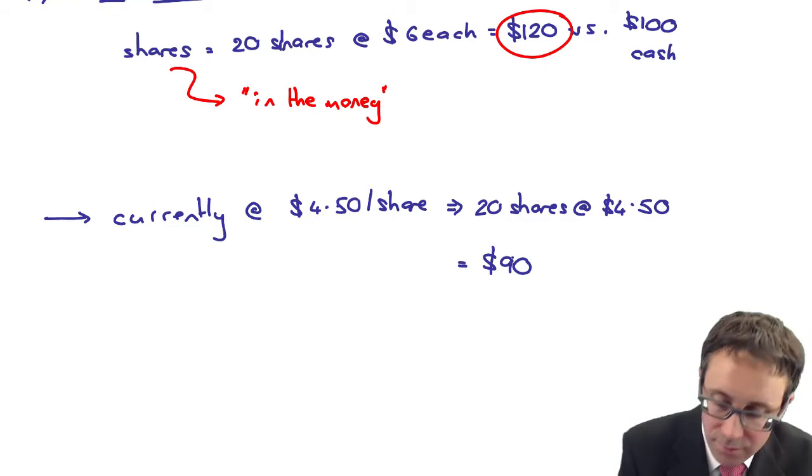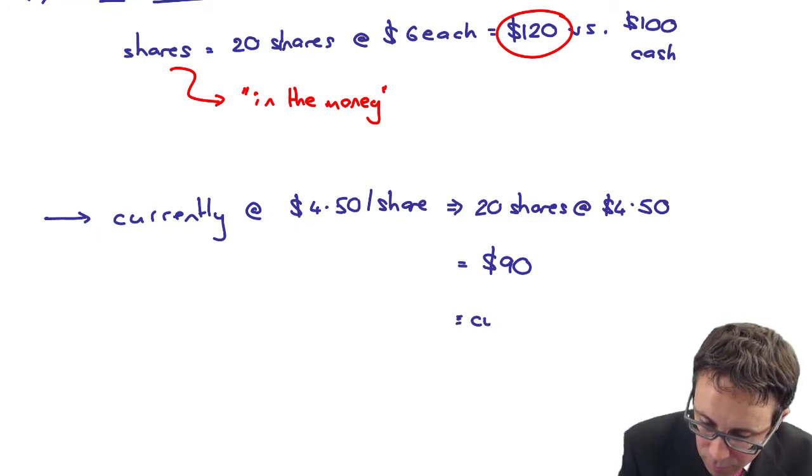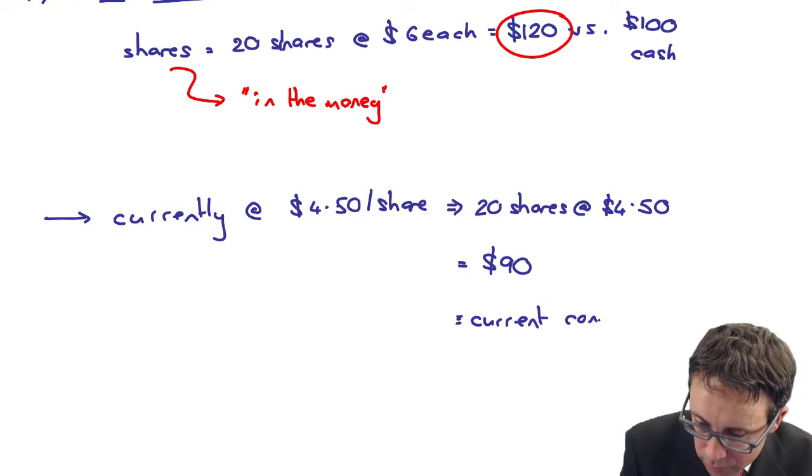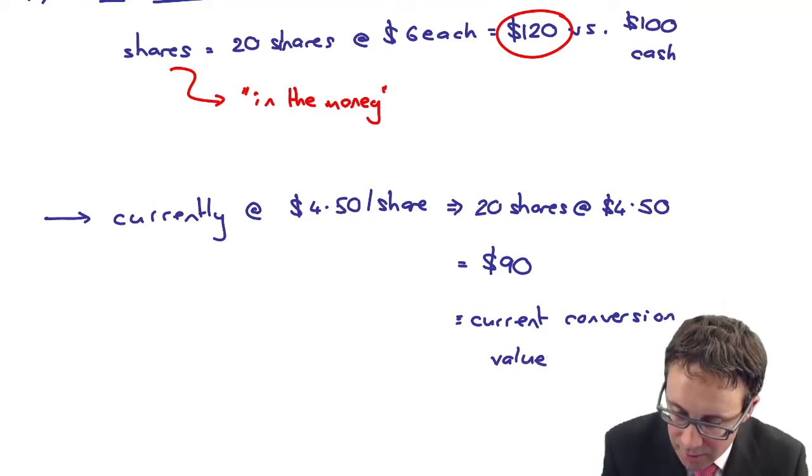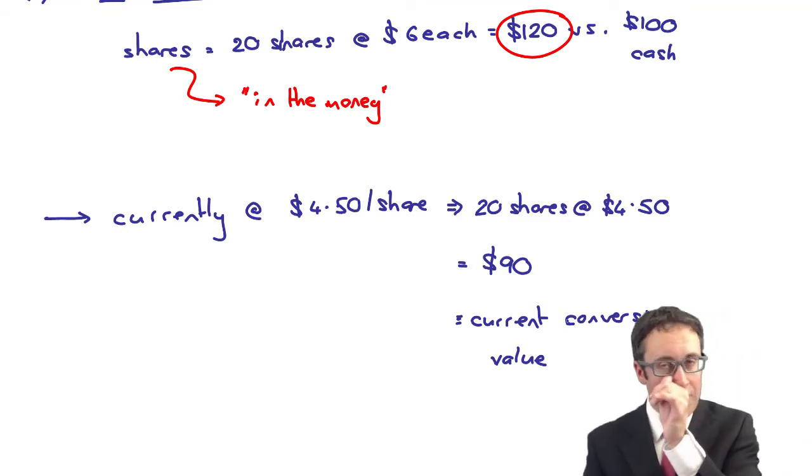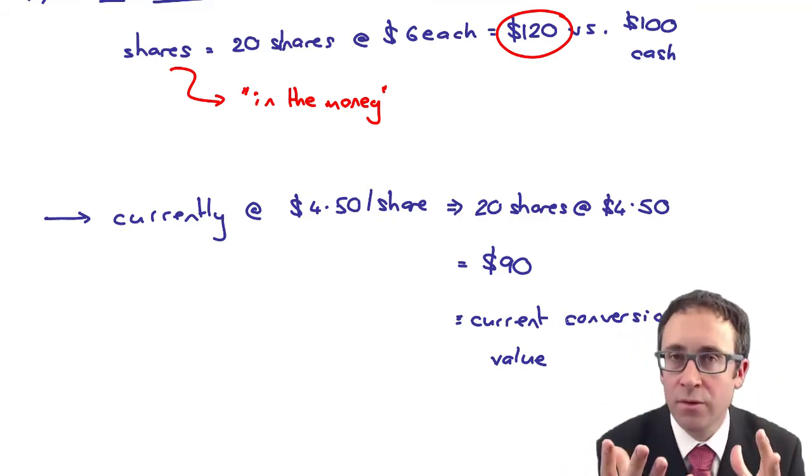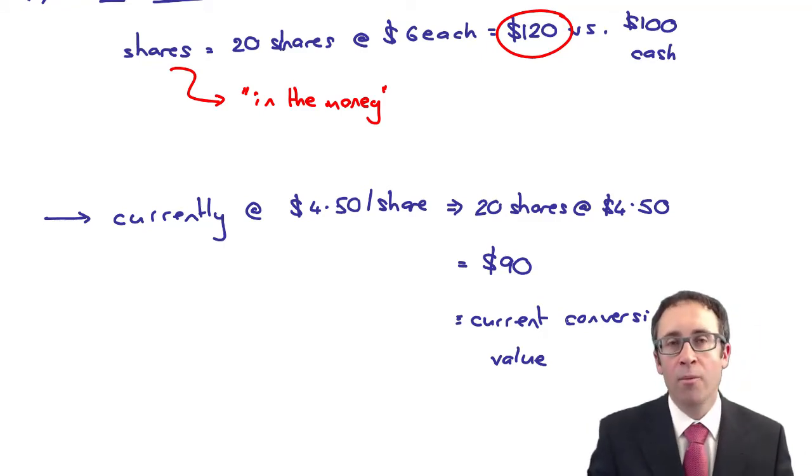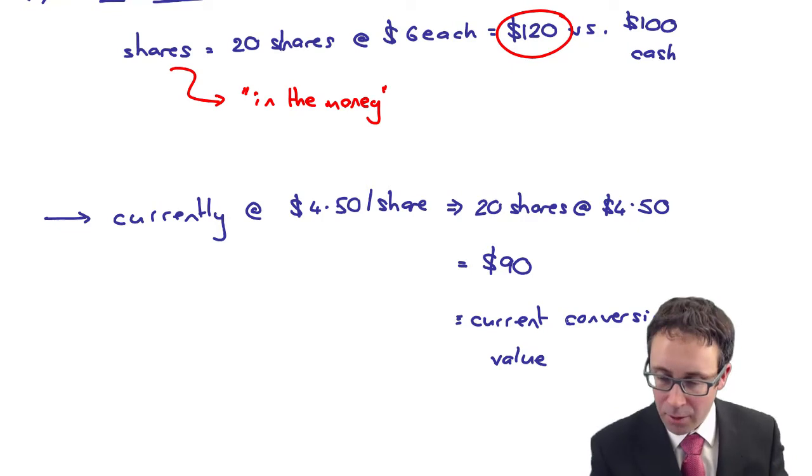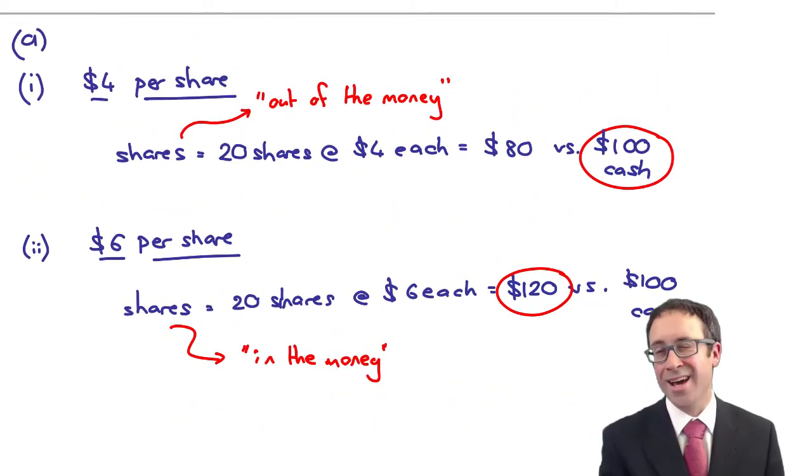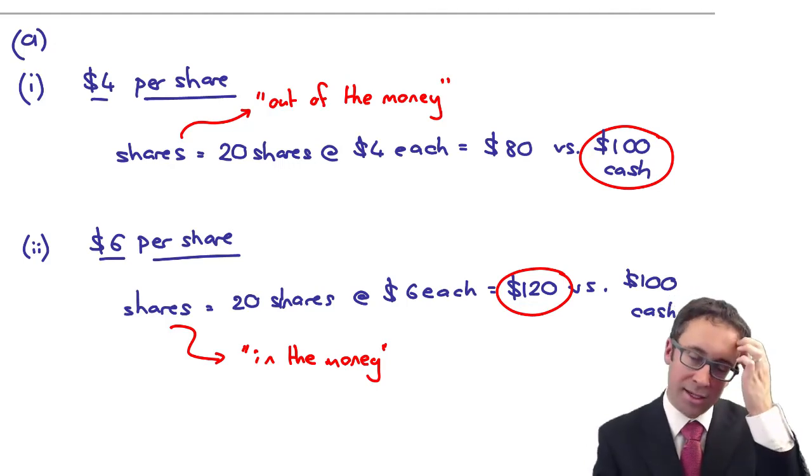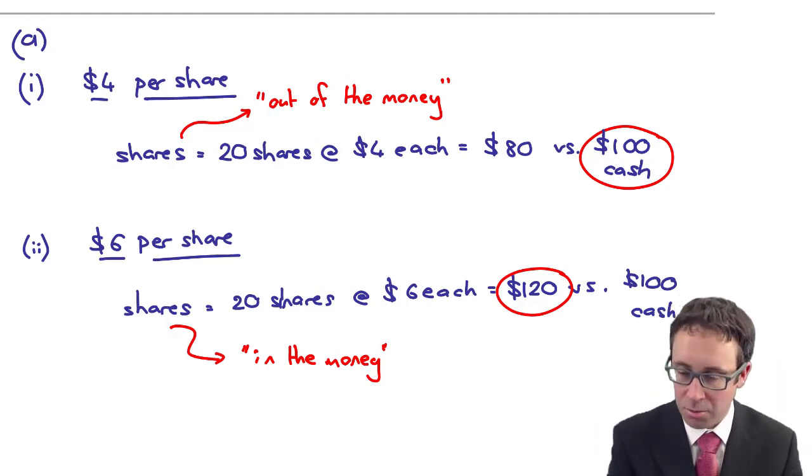That is referred to as the current conversion value. So a little bit of terminology there. The current conversion value is if you were to convert for shares, it's $90. I know it's not asked for within the question, but it becomes relevant as we go through and work part B. But in answering part A, you've got your current conversion value which is $90. At $4 per share, we're going to take the cash. If it was to go to $6 per share in 2019, we would take the shares. So that answers part A.